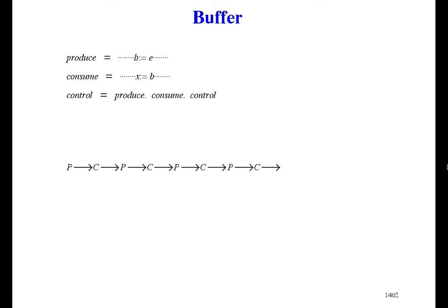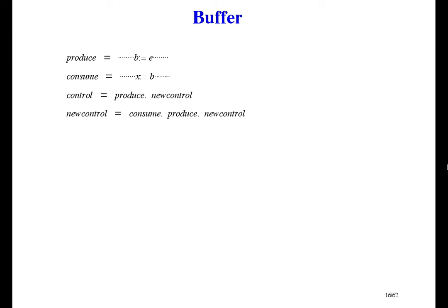Produce and consume might each take a long time, and we want to save time by running them in parallel. Well, we can't directly, because the rule says no variable assigned in the first can appear in the second — obviously consume can't use b until after b is assigned. So here's what we do: we unroll the loop once. We start with produce, and then new control starts with consume, followed by produce, and then repeat. Now it follows the rule, so we can put them in parallel. The implementation has to make a copy of b, and consume uses the copy.